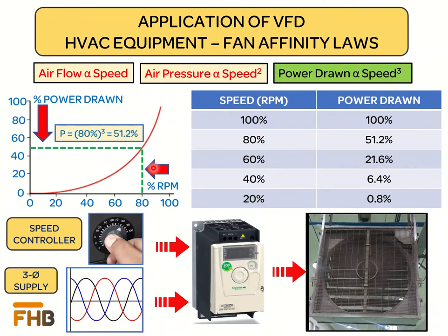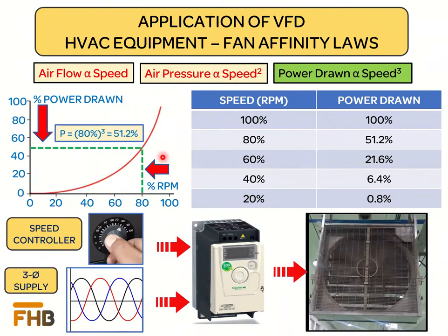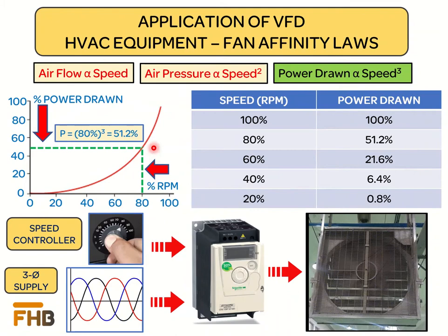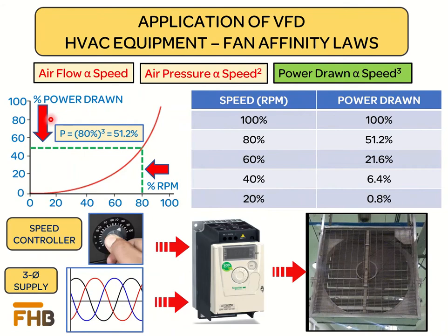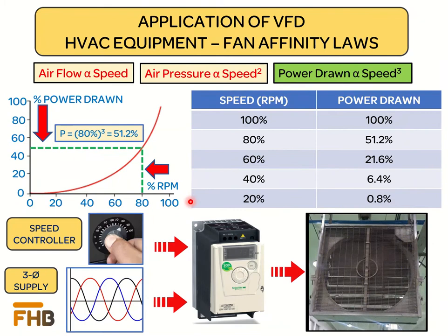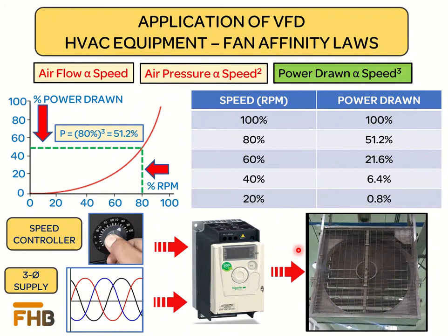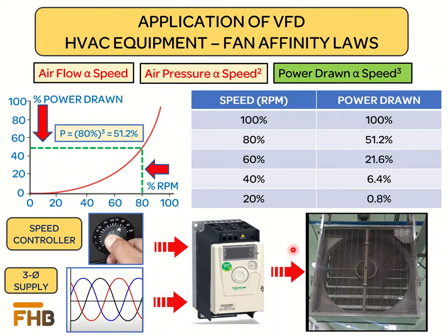We do not need to run fans at 100% speed at all times. We can adjust the speed of the fan based on the required airflow. For instance, if we reduce the fan speed from 100% to 80%, the power drawn will be reduced to nearly 50%, which is a very significant saving on the electricity bill. Reducing speed to even lower values will save more power, as shown in the table. The circuit implementation for this speed control is very simple — we provide the VFD three-phase power and the desired reference speed value, and the VFD provides the fan motor a waveform that drives it at the desired speed.